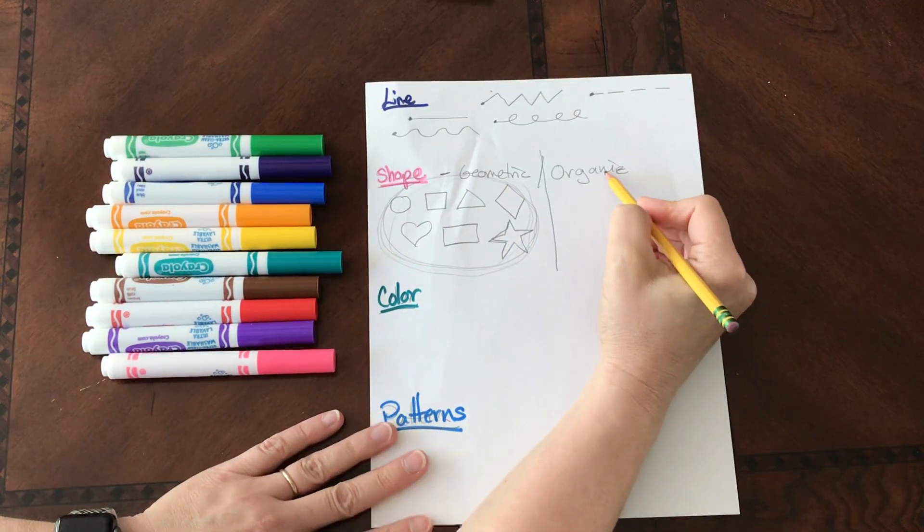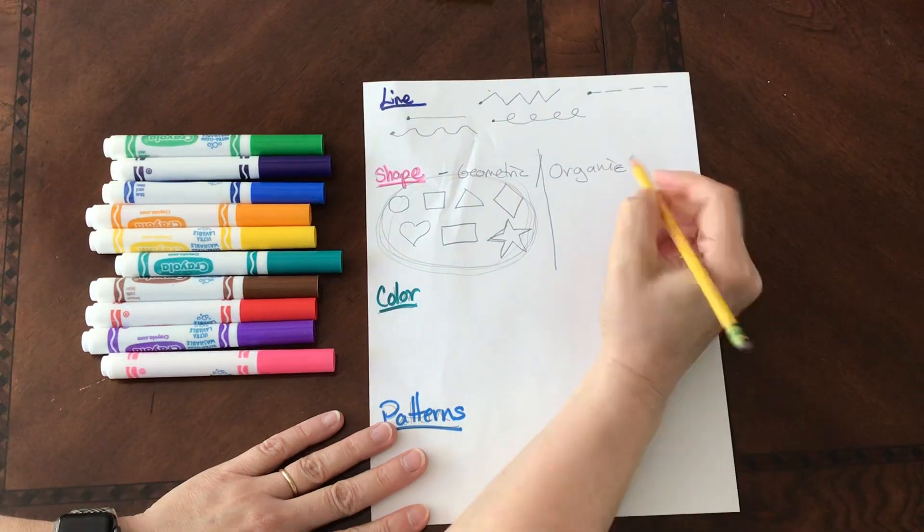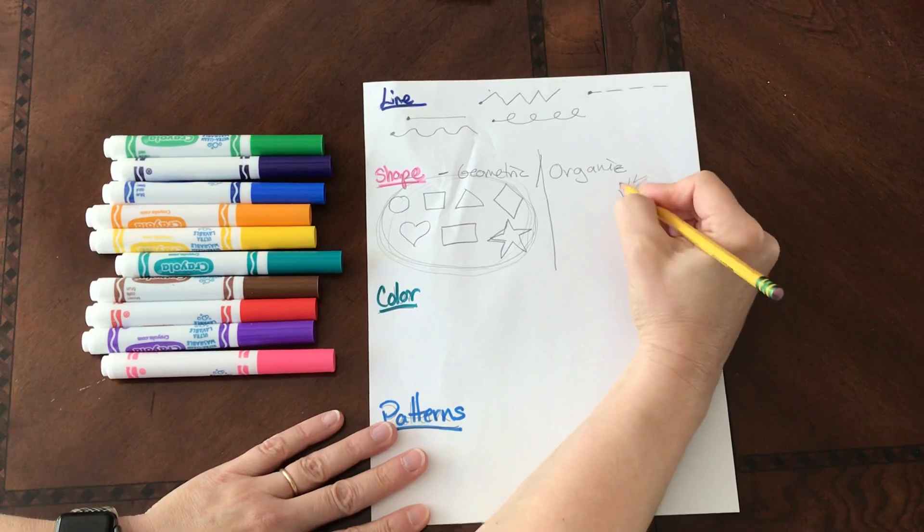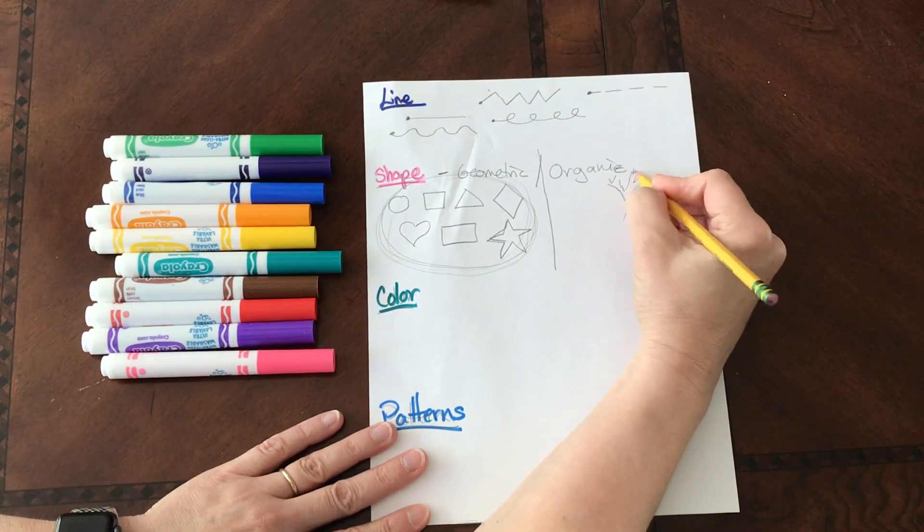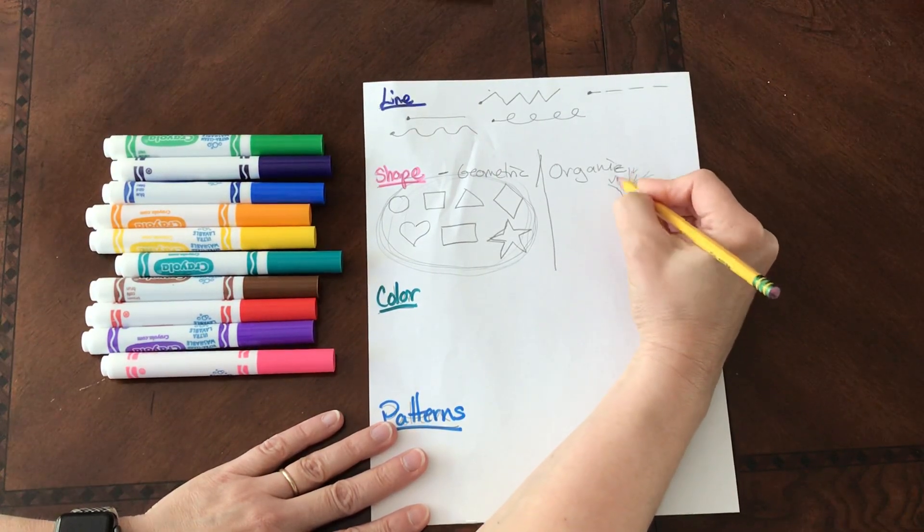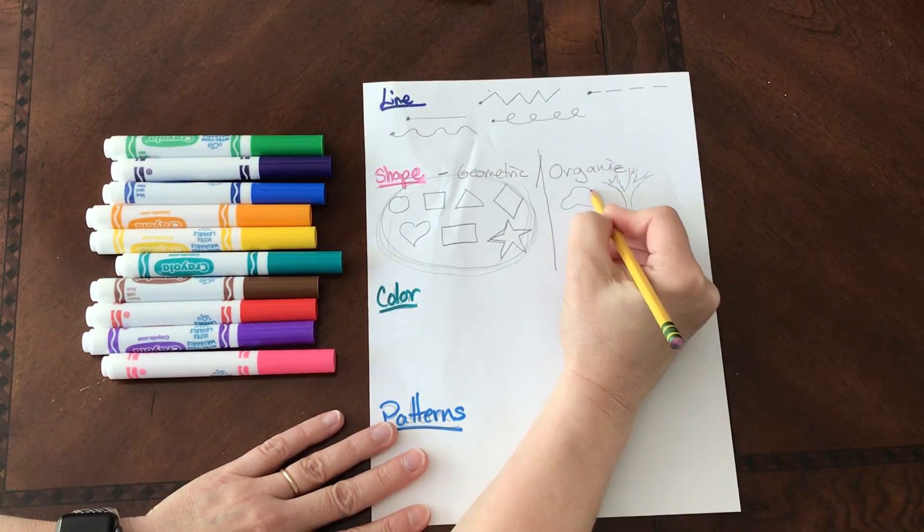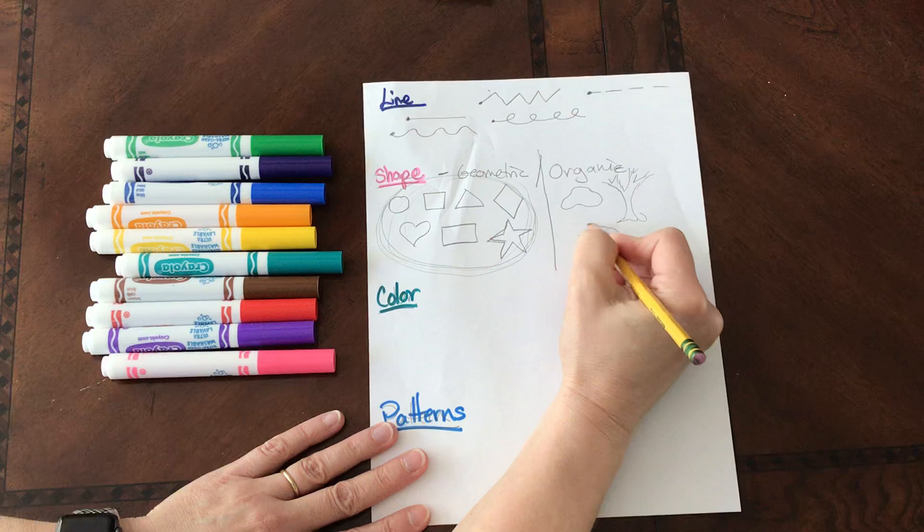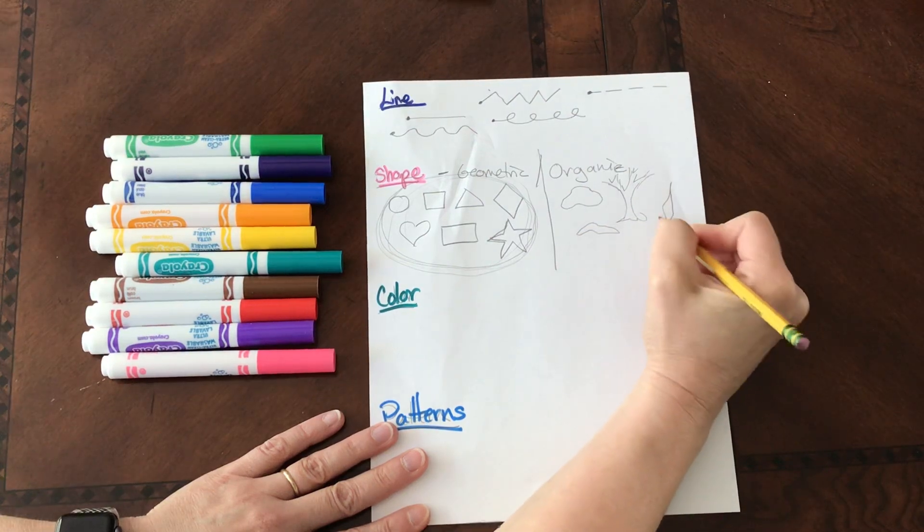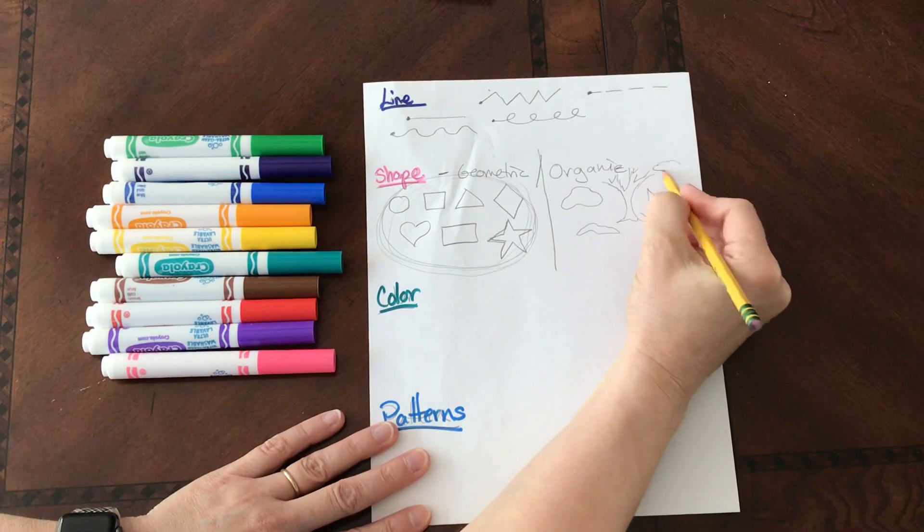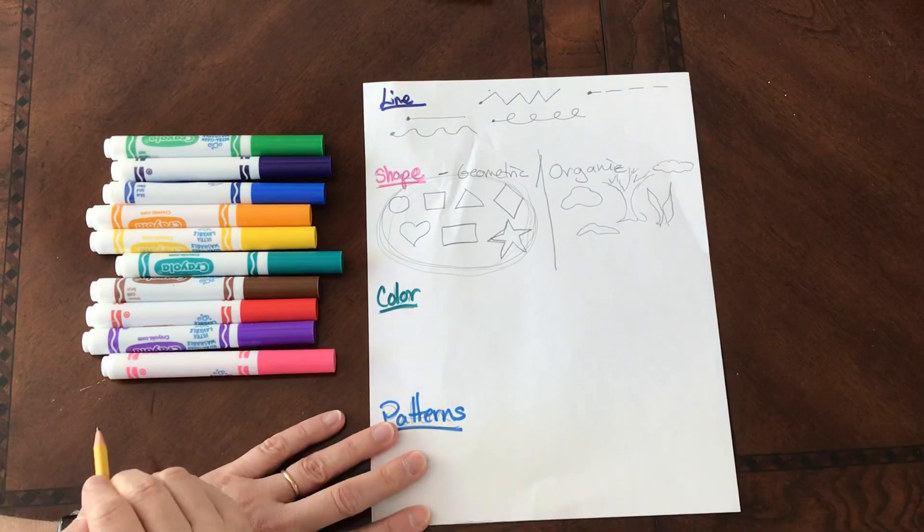Organic shapes are kind of like a tree. Organic shapes don't fit into a circle, square, triangle category. It might be a blob or a rock or a piece of grass. These are all considered organic shapes. A cloud is considered an organic shape.